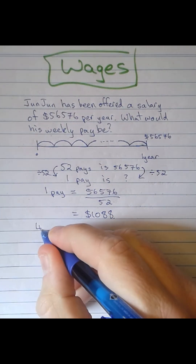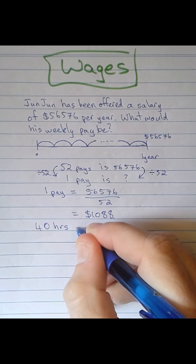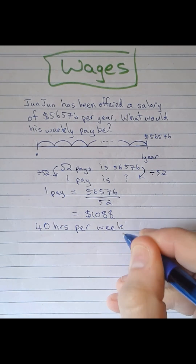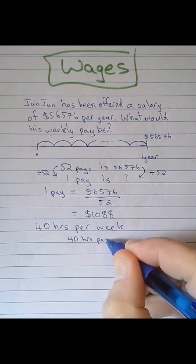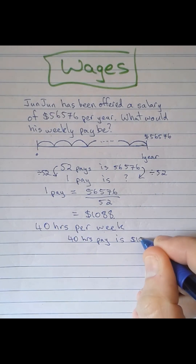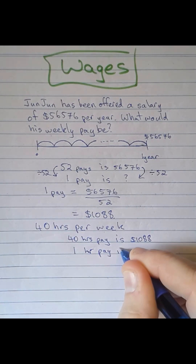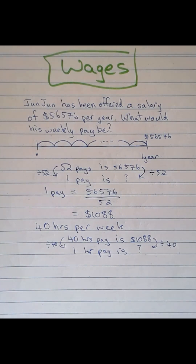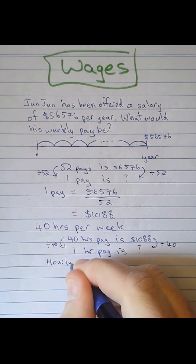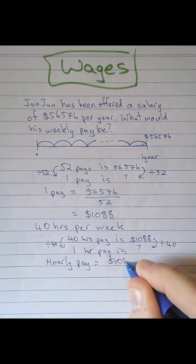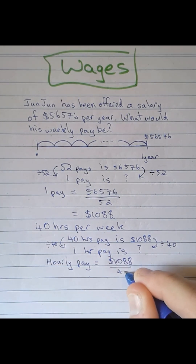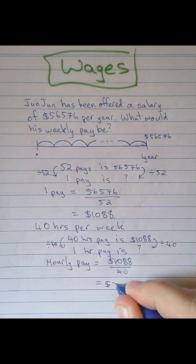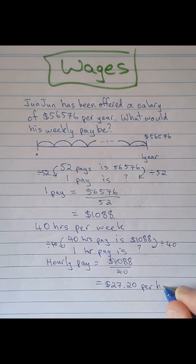Let's say Junjun also knew that he works 40 hours per week. Junjun wants to know how much he will be getting paid per hour based on this same salary. We need to note that one week is equal to 40 hours. So $1,088 divided by 40 gives us $27.20 per hour.